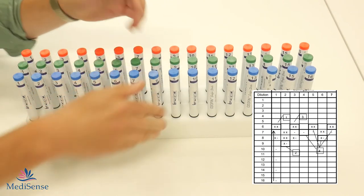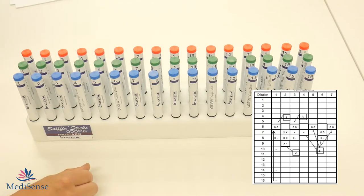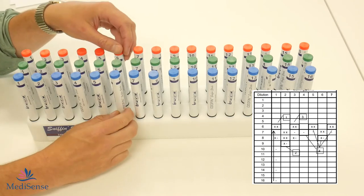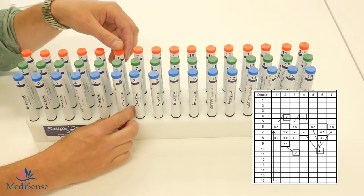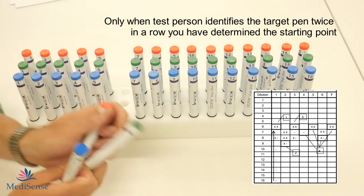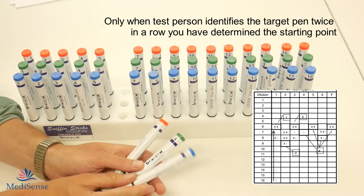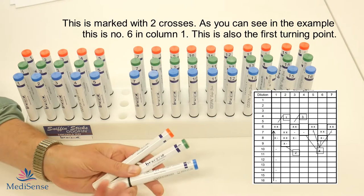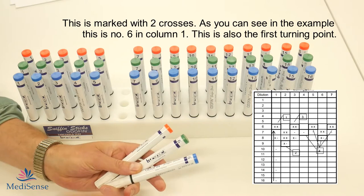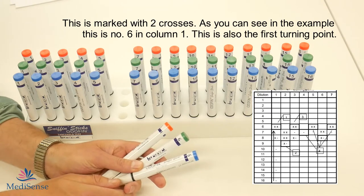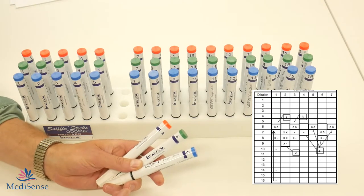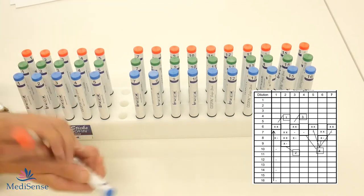If it is guessed right again then that is the start point of the threshold test. But in the example number 8 was not guessed right so it continues to number 6. And as you can see on the example in the manual, number 6 was guessed twice in a row. That means that is the first starting point and the first double cross in the first row.